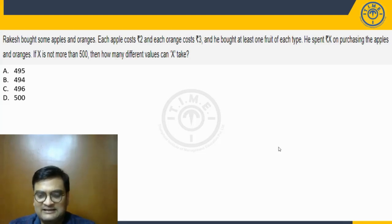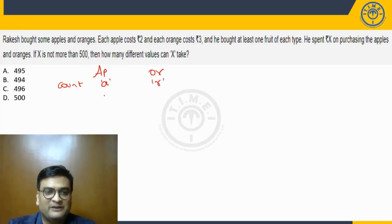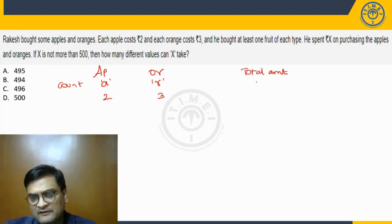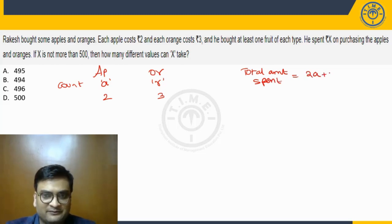So let's get started with the question. The question says, Rakesh bought some apples and oranges. Let's say the number of apples, the count is A, and R number of oranges. Each apple costs 2 rupees, each orange costs 3 rupees.